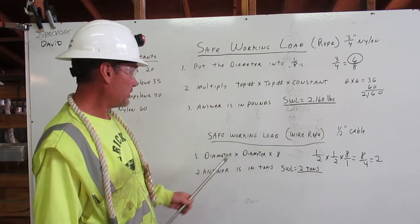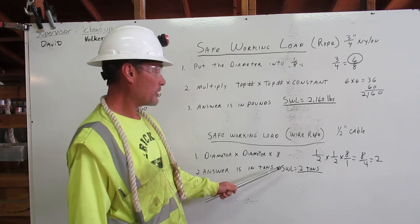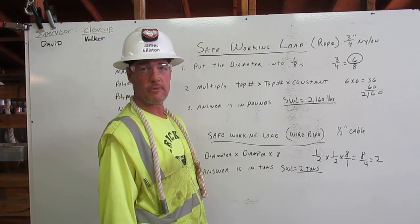The answer for wire rope is in tons. So the safe working load for wire rope is two tons. Thank you.